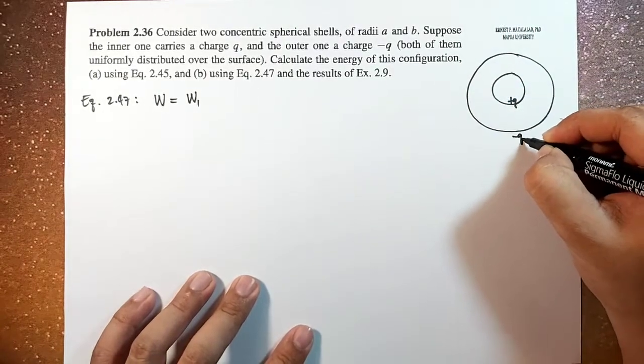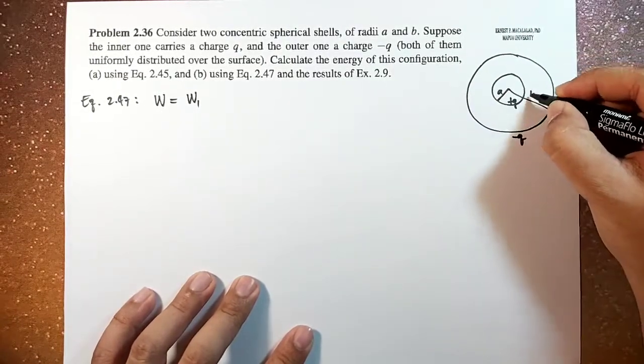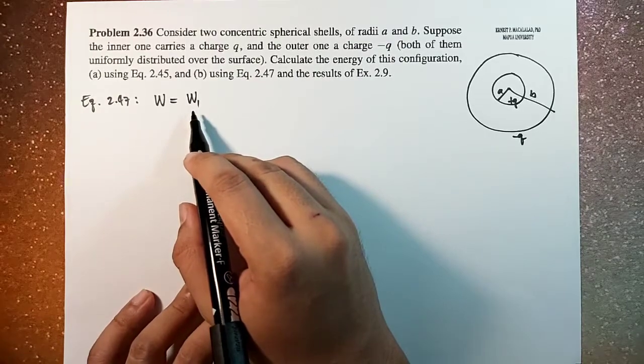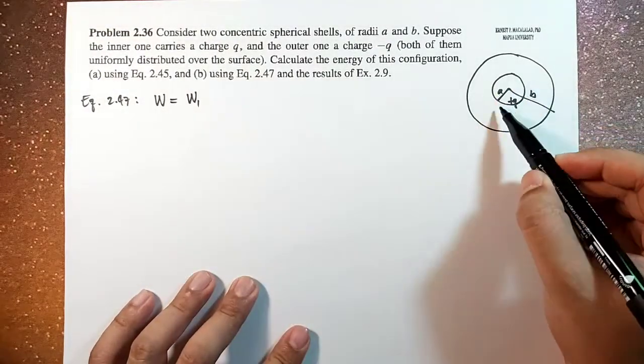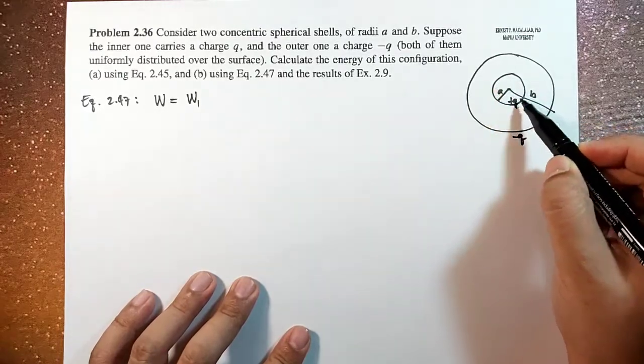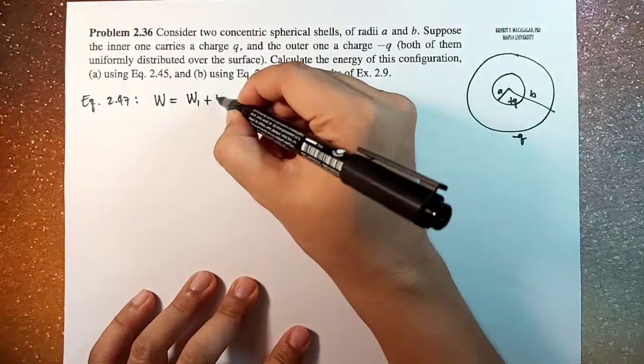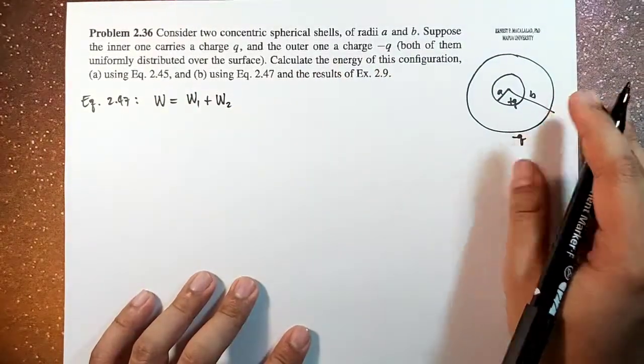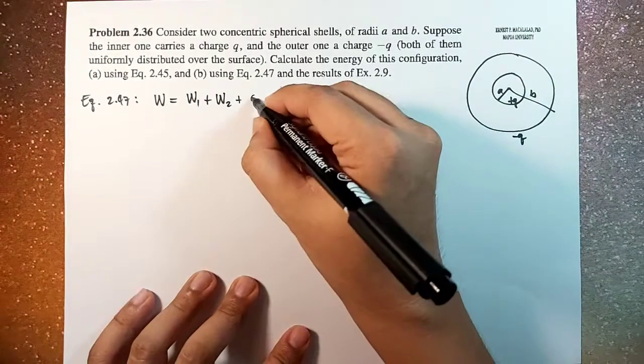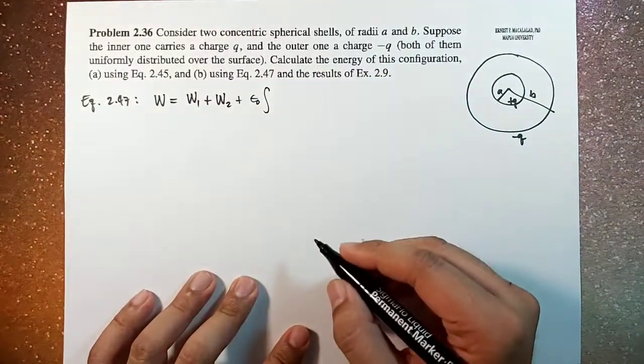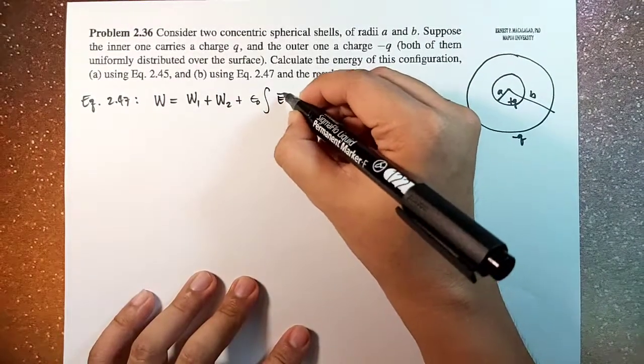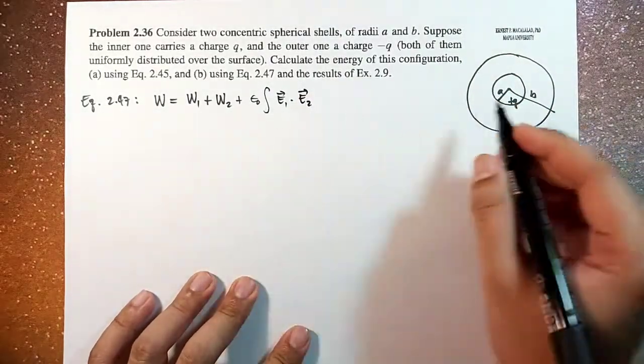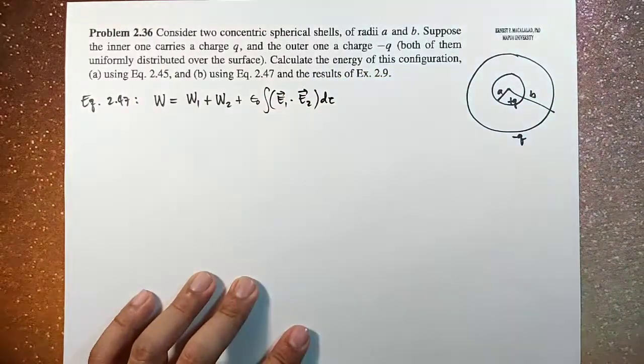One is positive Q and one is negative Q with radius A and B. So W1 here or energy 1 pertains to the work or the energy stored in the inner shell. Then we add it to the total energy stored in the outer shell as if individually. And then we add this term epsilon naught times the volume integral of the dot product of the electric field. And the electric field of the inner, dotted with the electric field of the outer.